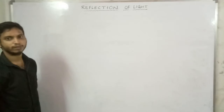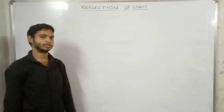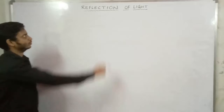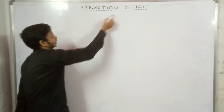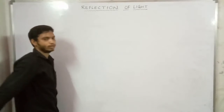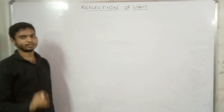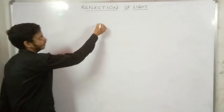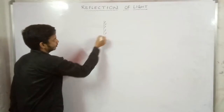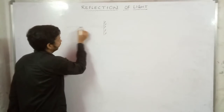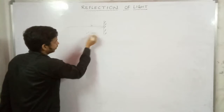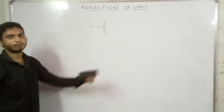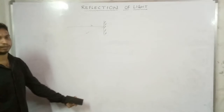Reflection of light on the plane surface — we will discuss. Reflection of light: reflection is the phenomenon of getting back the light when it falls on a surface. So, if light is incident on a surface, then the light returns. That process is called reflection.